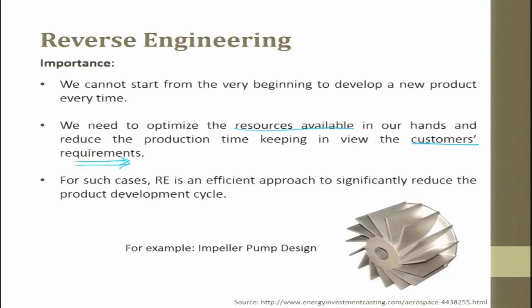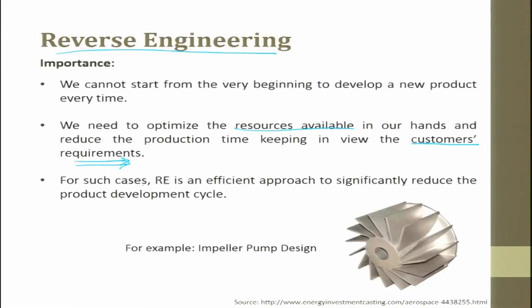Suppose we find a product already existing in the market and people are very happy with it, but find only one problem — it is very expensive. What you as an engineer working on rapid manufacturing would do is take the product, split it into several small assemblies, then split those into several parts. You scan the parts and sub-assemblies, write down all the functions, put costing against those functions, and find where the maximum cost is. Then you work on how to reduce the price without sacrificing performance. For such cases, reverse engineering is an efficient approach to significantly reduce the product life cycle.